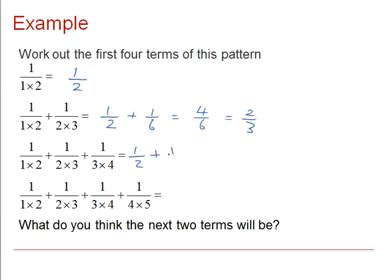Continuing again, we would have a half plus a sixth plus a twelfth, which would give us 9 twelfths, or cancelling down 3 quarters, 3 over 4.